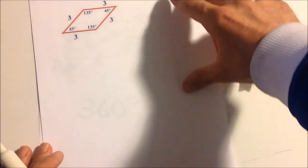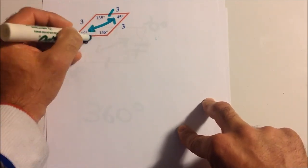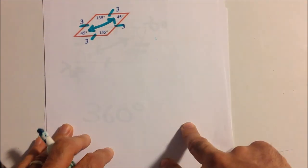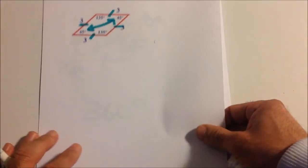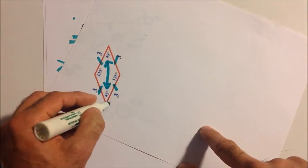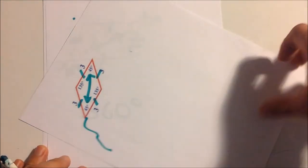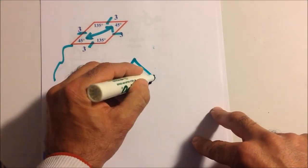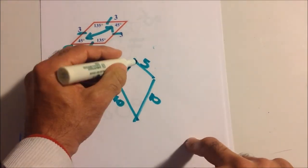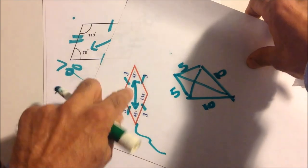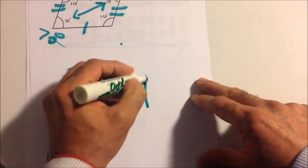A rhombus satisfies the same requirements as a parallelogram — opposite angles are congruent and it has two pairs of parallel sides — except all sides are equal. So a rhombus is a parallelogram. A rhombus can also look like a kite, but the shape itself is just a rhombus. A kite can look different — with different measurements — or it can look like a rhombus. Either way, a rhombus is a parallelogram.